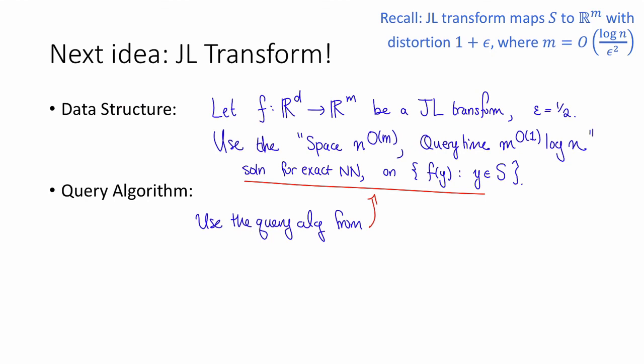So that's a reasonable idea. How well does this do? The space that we need is going to be n to the big O of m, which since m is big O of log n is going to be n to the big O of log n. An expression of this form is called quasi-polynomial in n, which is very fun to say. And the query time is going to be m to the big O of 1 times log n, which is equal to something polylogarithmic in n.